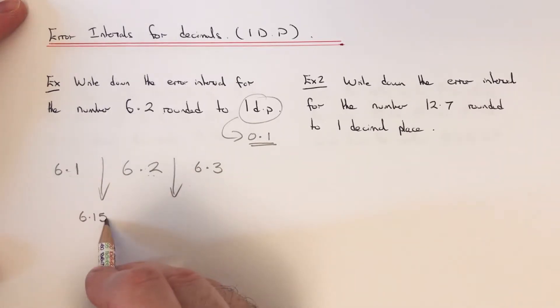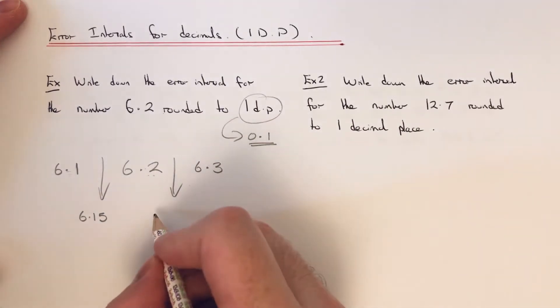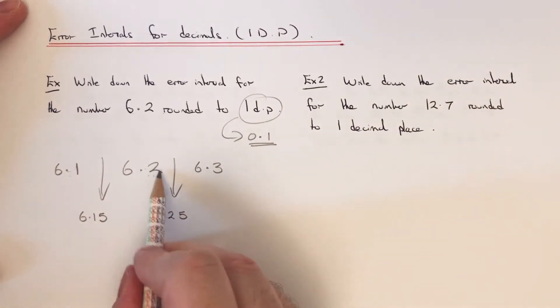Or if you notice as well it's just putting a 5 on the end of this number. And then halfway between 6.2 and 6.3 would be 6.25. So again if you notice I've just put a 5 on the end of that number, or you can add the two numbers up and divide by 2 again.